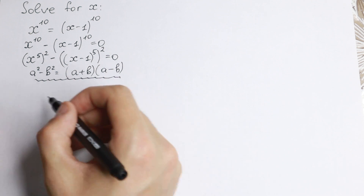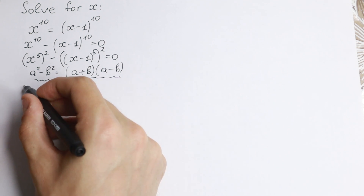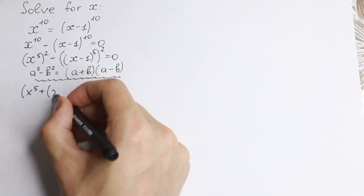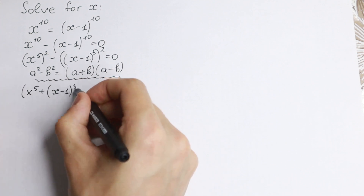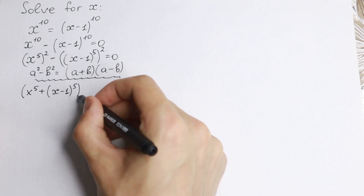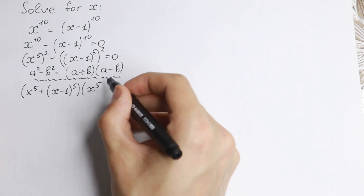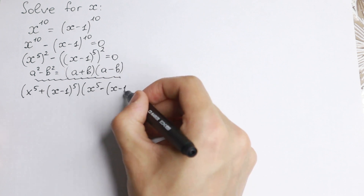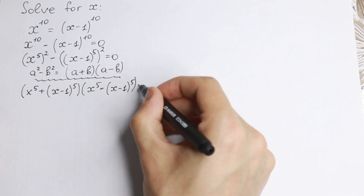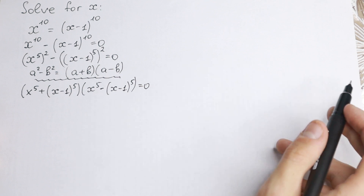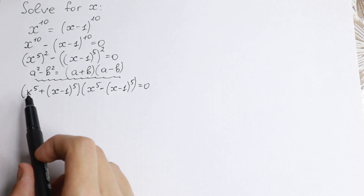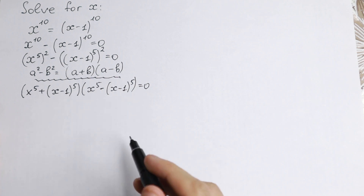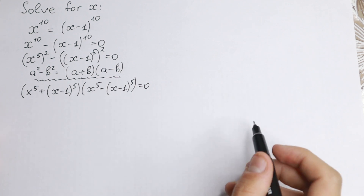So let's use this formula. We will have x to the fifth power plus x minus 1 to the fifth power, times x to the fifth power minus x minus 1 to the fifth power, equal to 0. As you can see, the left factor will give five roots and the right factor will give five roots as well.